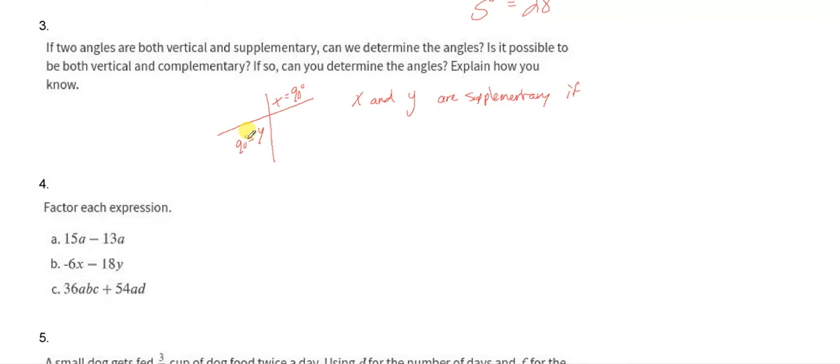And if that's the case, that means that the both of the lines would have to form perpendicular lines. So X and Y are supplementary if lines are perpendicular.